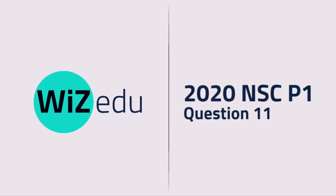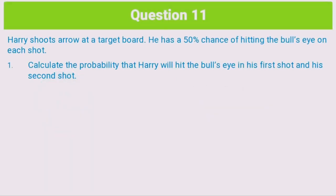Hi guys, it's Ashraf from WizEdu, and today we're going to be going through question 11 of the 2020 NSC Mathematics Paper 1. I'm posting this video because I just got my hands on the paper and went through it. All in all, it was a fair paper, except for question 11, specifically question 11.3, which I thought was quite a difficult question — more like a grade 8 or 9 Maths Olympiad type of question requiring a lot of thinking. But we're going to go through question 11 from the top, just to get some context.